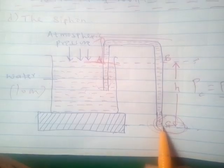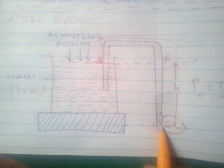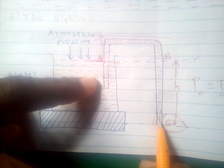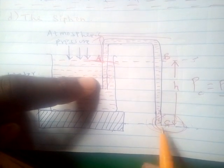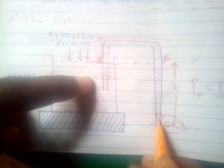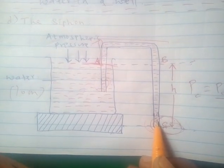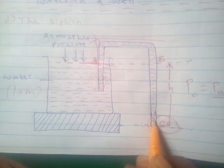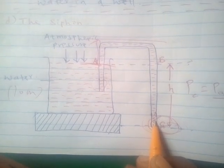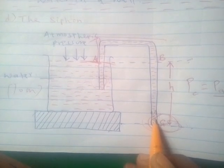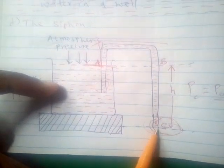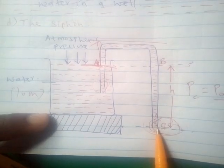The fourth condition is that the tube must first be completely filled with the liquid, with no bubbles of air. This is because air exerts pressure and would interfere with the atmospheric pressure drawing the liquid from the container.